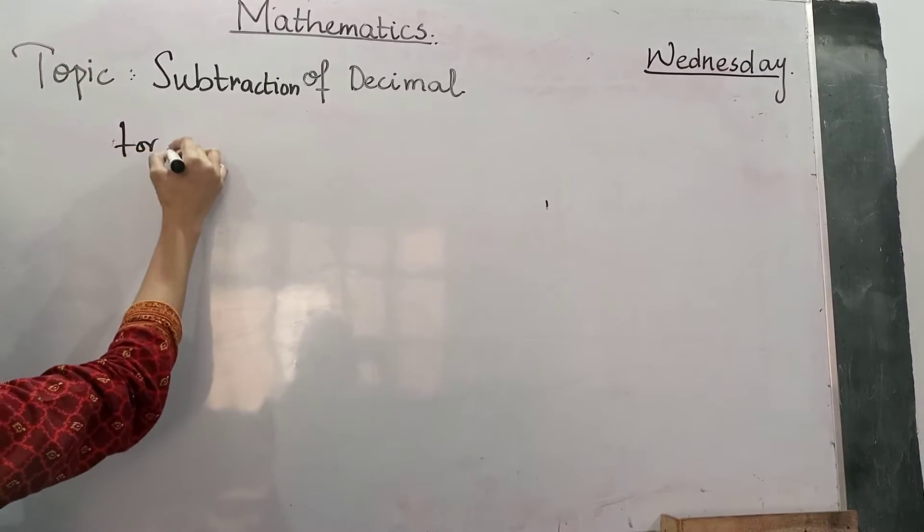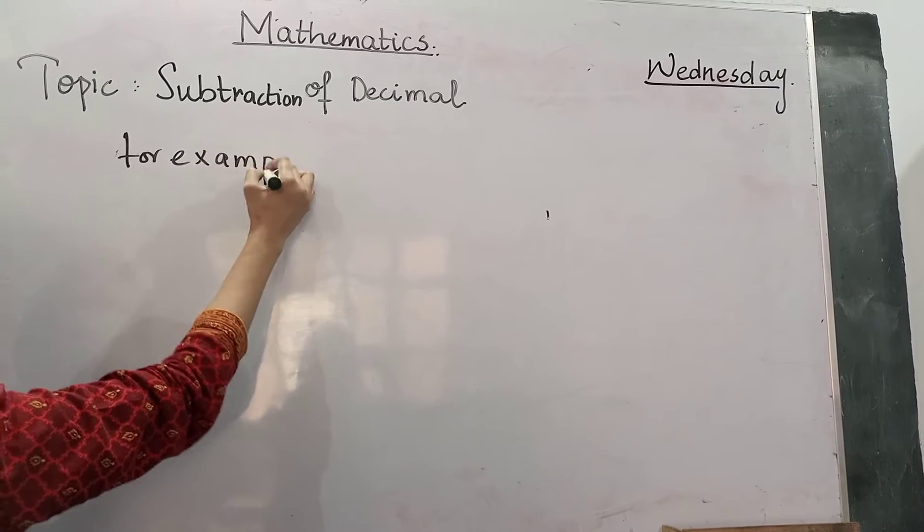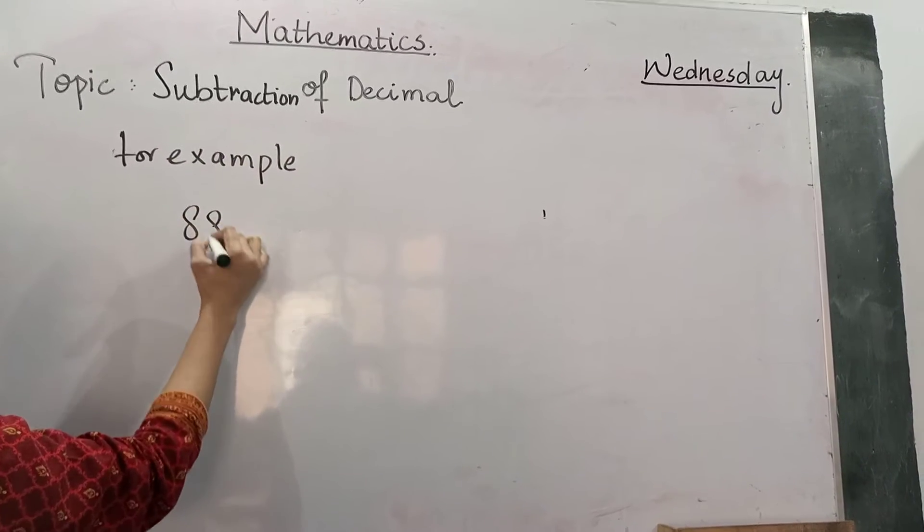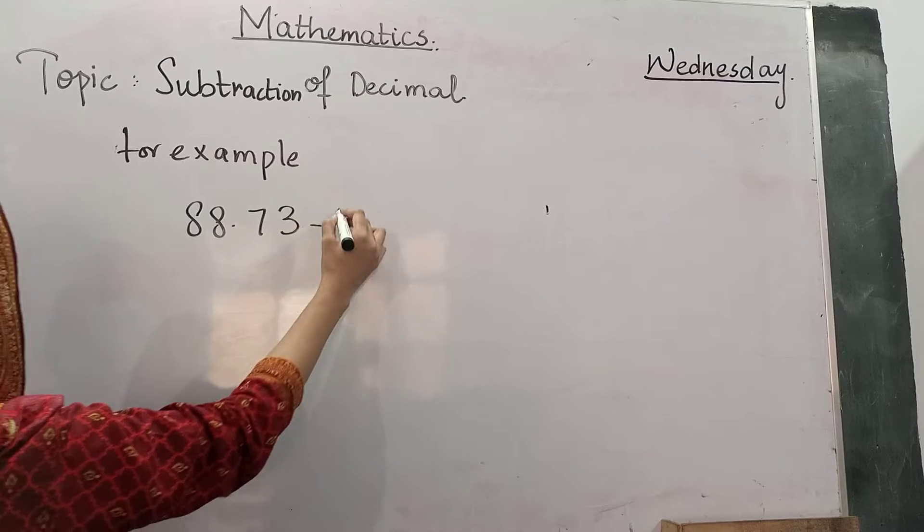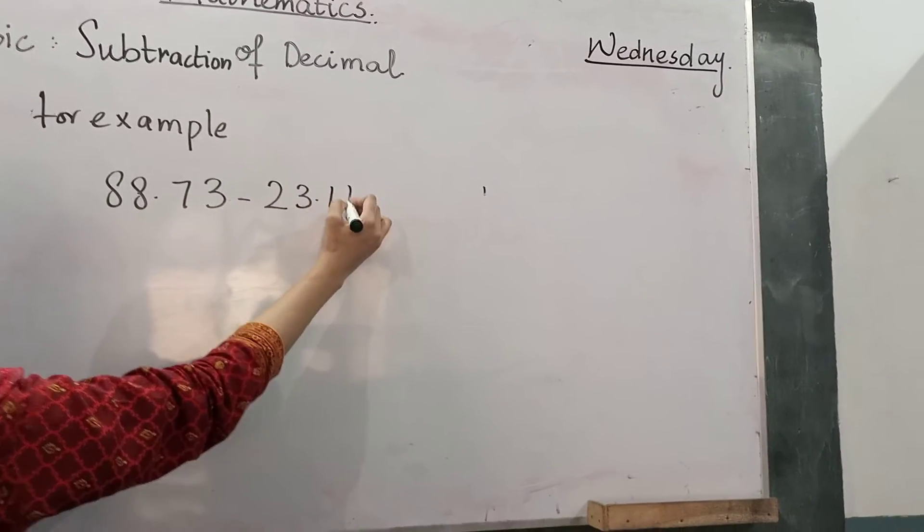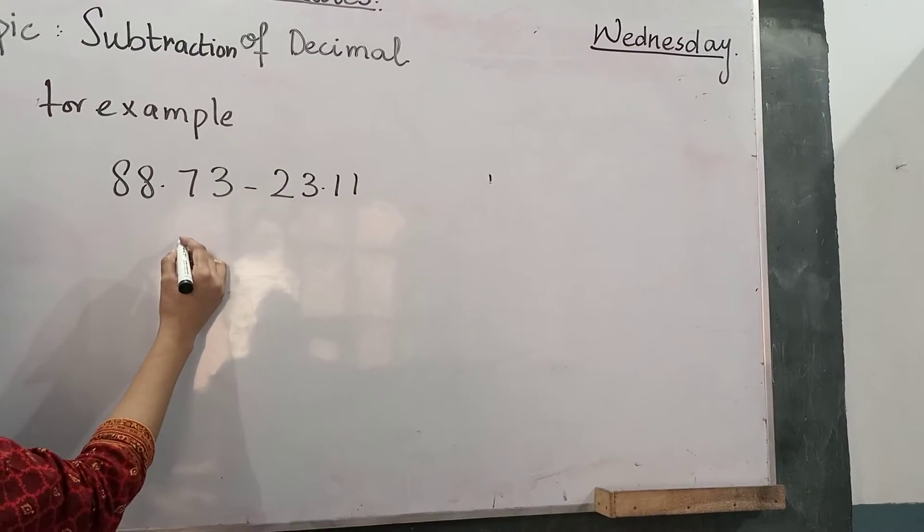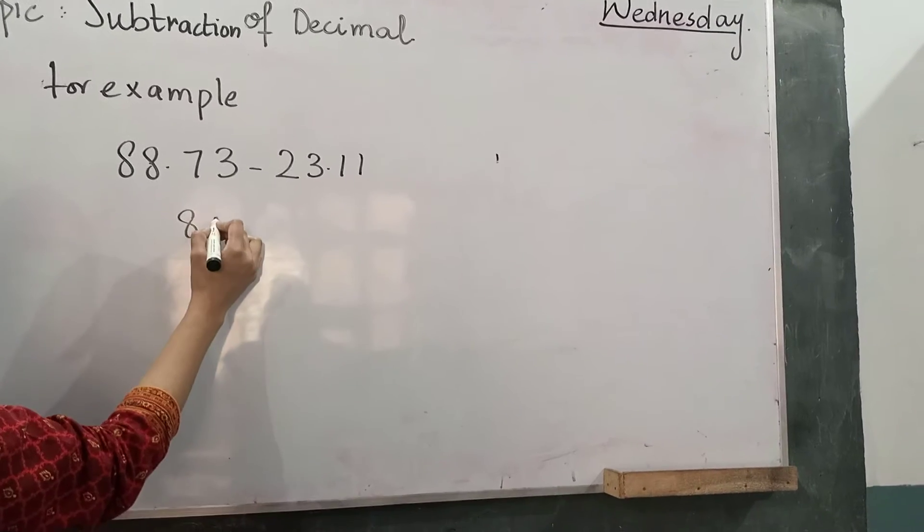For example, 88.73 minus 23.11. So, at first step, we will write it vertically.